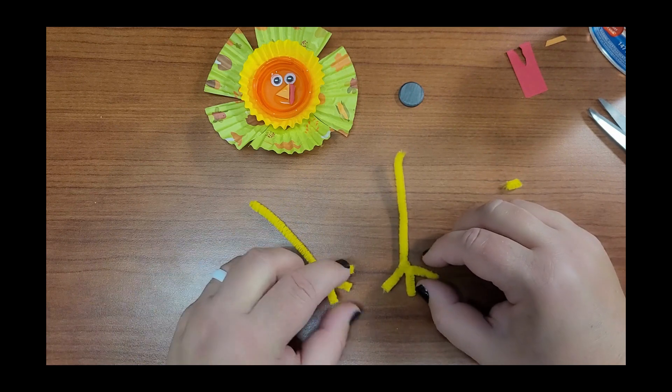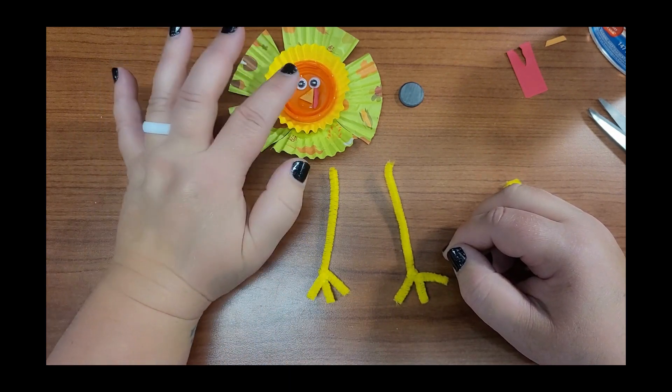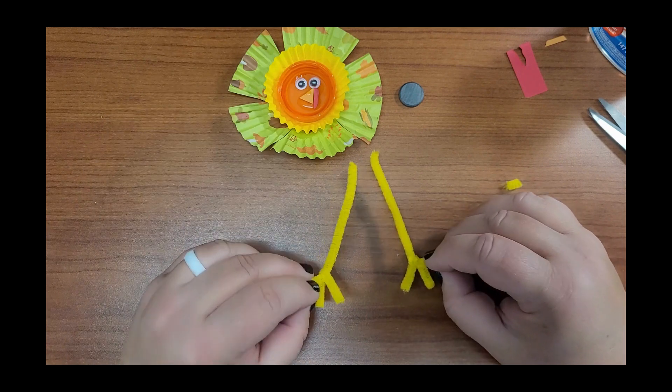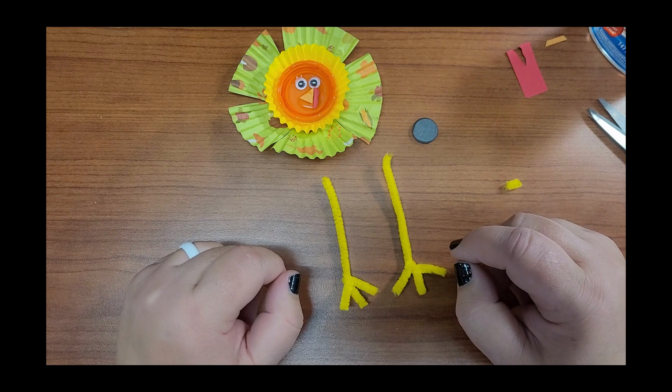So our last step is going to be to turn this turkey over. We're going to glue his legs and the magnet on. I'm going to wait just a few minutes for my turkey to dry, and then we'll do this final step.